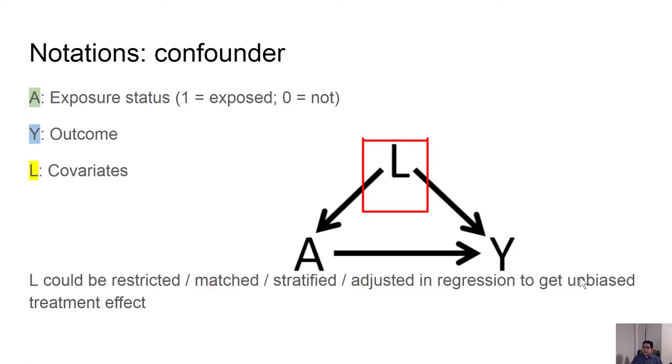In that case, A is our exposure, Y is our outcome, and L is the age variable. We can simply adjust for this age variable to get this link broken. If we adjust for this L variable, then the association between A and Y will be unconfounded.